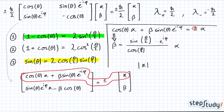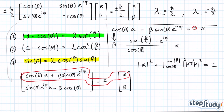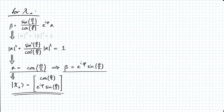We now have to use the fact that the state has to be normalized — the absolute square of alpha plus the absolute square of beta has to equal 1. Plugging in beta and taking its absolute square is more or less straightforward. Remember that the complex exponential is on the unit circle, so its absolute square is 1. You'll find that alpha equals cosine of theta over 2, and therefore beta equals the complex exponential times sine of theta over 2. That's what we get for the positive eigenvalue.